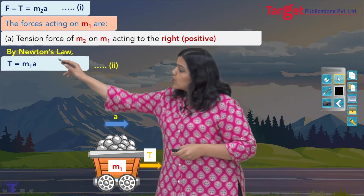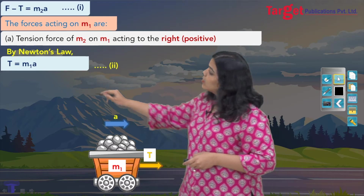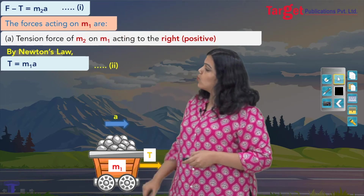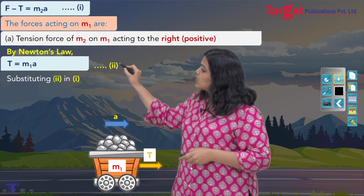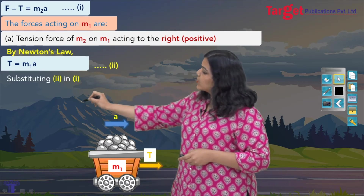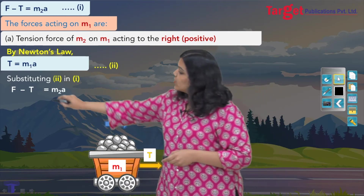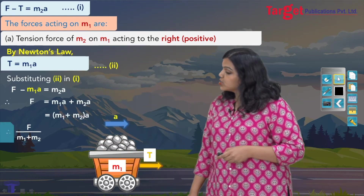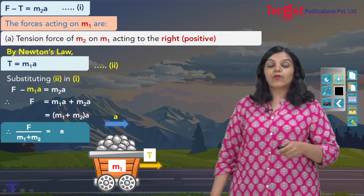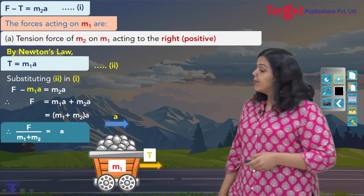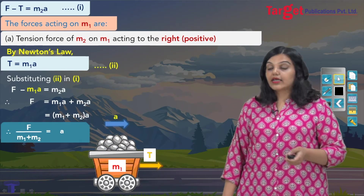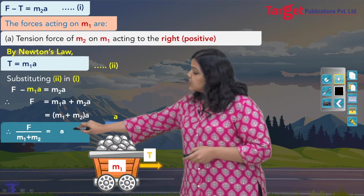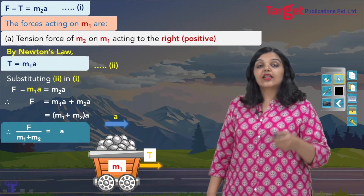Now see what I can do. Equation 2 gives T equals m1a. I can substitute this expression for T into equation 1. Rewriting equation 1: F minus T equals m2a, but instead of T I substitute the expression from equation 2. Rearranging, I get an expression for acceleration: a equals F divided by (m1 plus m2). Simply speaking, acceleration equals the applied force divided by the total mass of all bodies. Once I have this expression for acceleration, I substitute it into the tension expression.